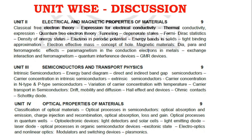Unit 2 is very vast — all topics are important. The most important topics include the expression for electrical conductivity and thermal conductivity, which are very important questions. Tunneling in the quantum free electron theory is another key topic. The derivation for density of energy states is also important, along with energy bands. Magnetic materials — dia, para, and ferromagnetism — also appear frequently as comparison questions.